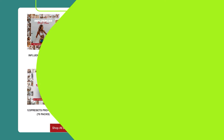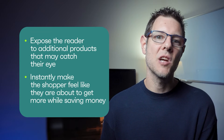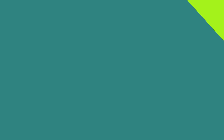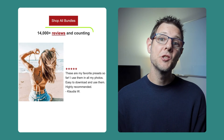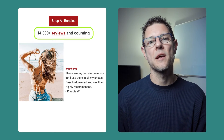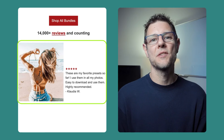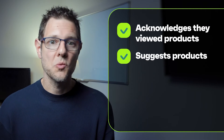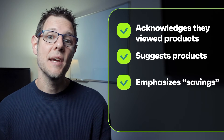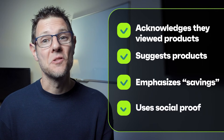That bundle-and-save section does two things: it exposes the reader to additional products that may catch their eye, and it instantly makes the shopper feel like they're getting more while saving money. Finally, they end the email with social proof — they mention the number of reviews, which establishes trust in the brand and products, and reinforce it with an image and a quoted customer testimonial. This is a great browse abandonment message: it acknowledges the shopper based on previous behavior, suggests a variety of products without being overwhelming, mentions savings, and uses social proof.